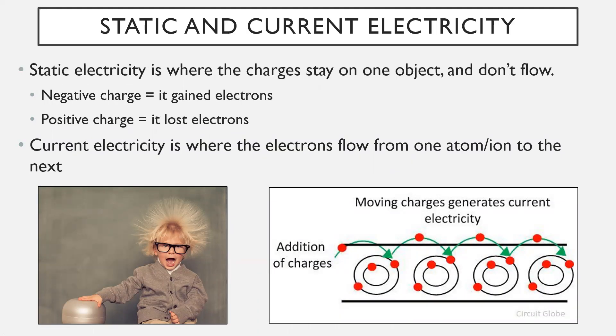First things first. The very beginning of this unit we talked about static and current electricity. You need to understand the difference even though they are very similar concepts. Static electricity is where the charges stay on one object and don't flow. If you have a negative charge, all that means is it gained electrons, whereas if you have a positive charge that just means it lost electrons. Now current electricity is where the electrons however are flowing from one atom or ion to the next. They're not just staying in one place. They're actually moving from one place to the next.